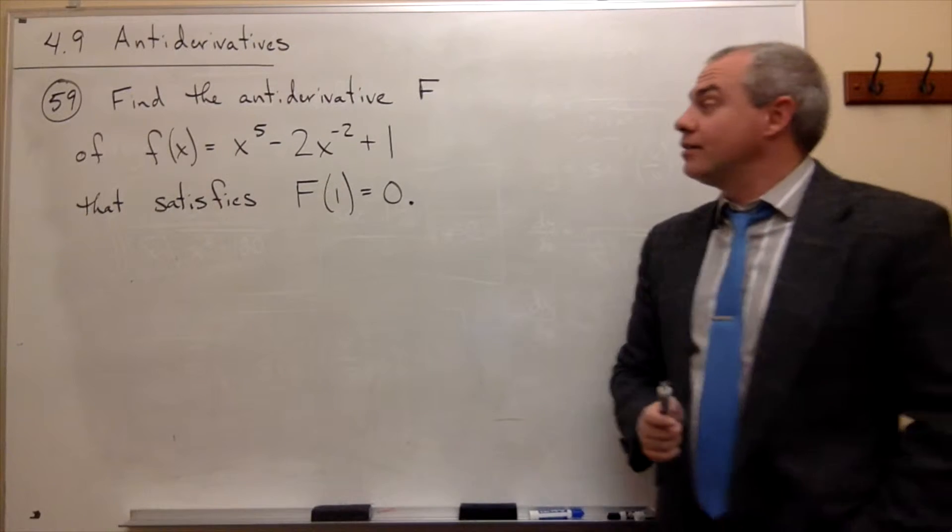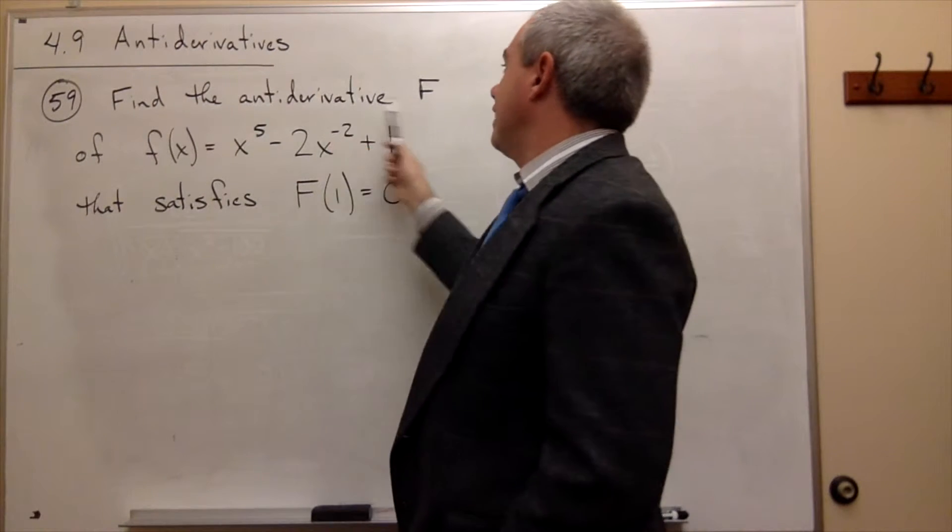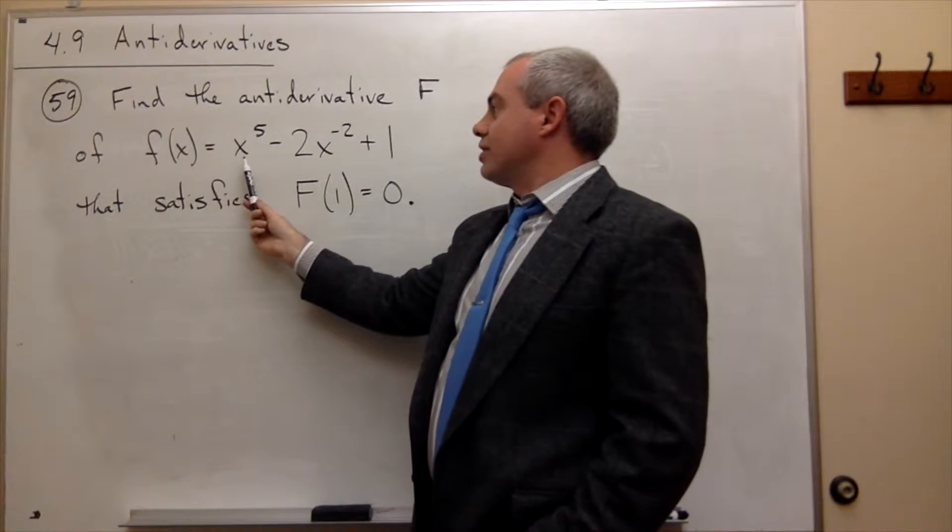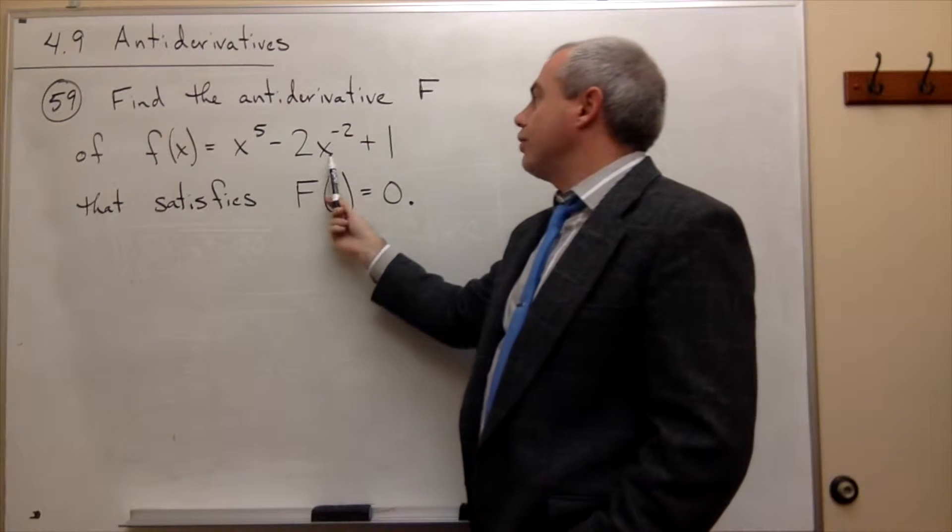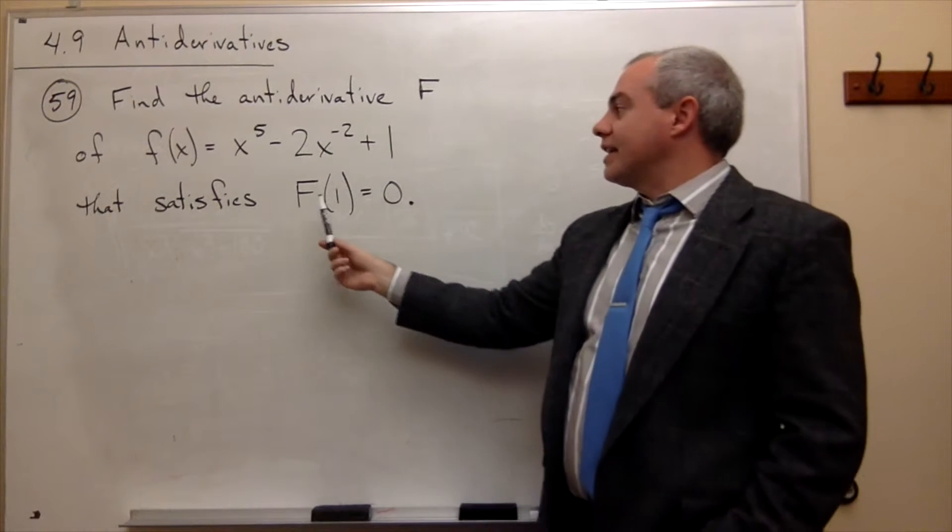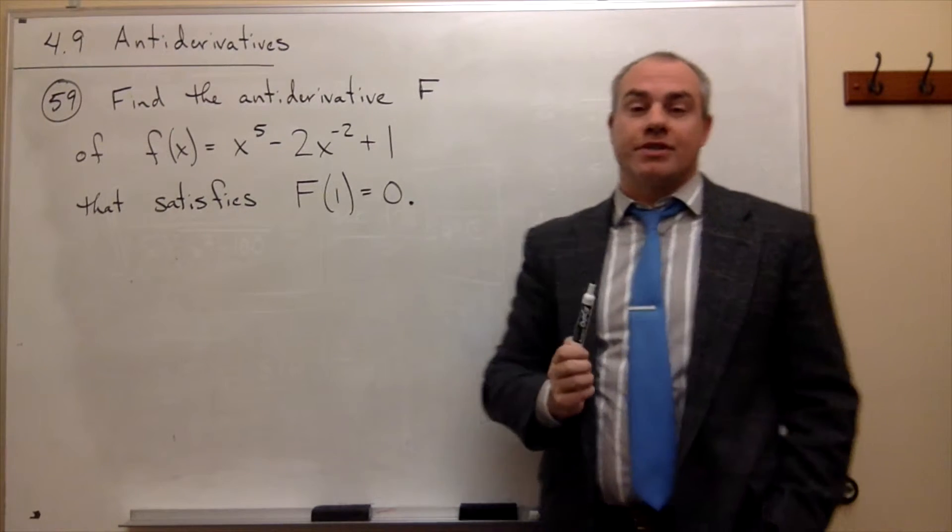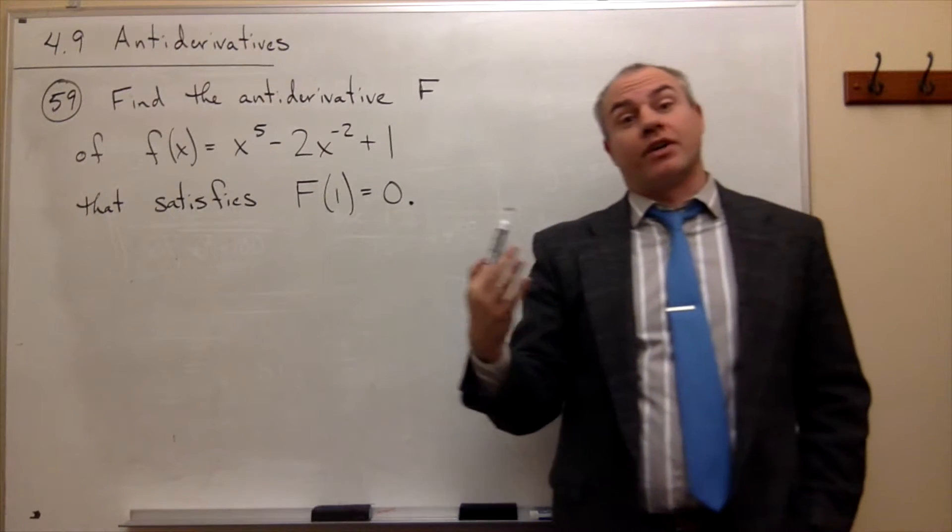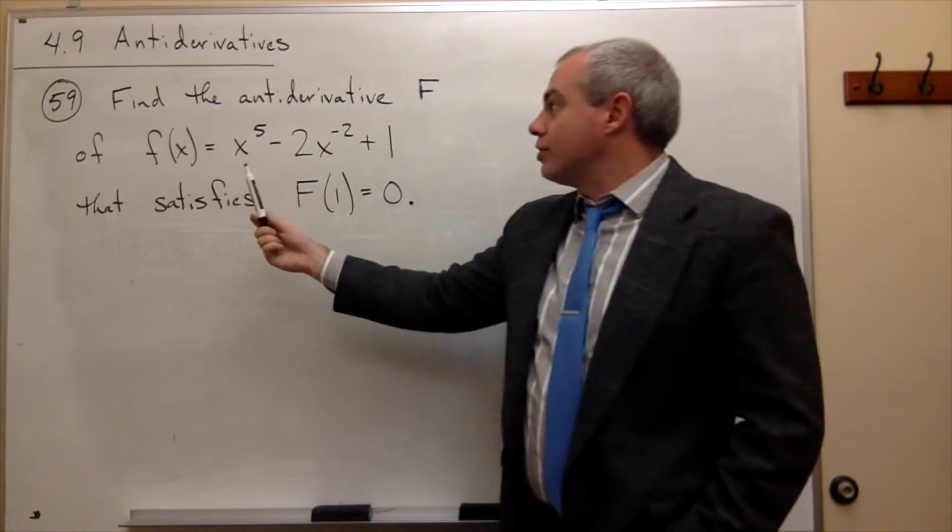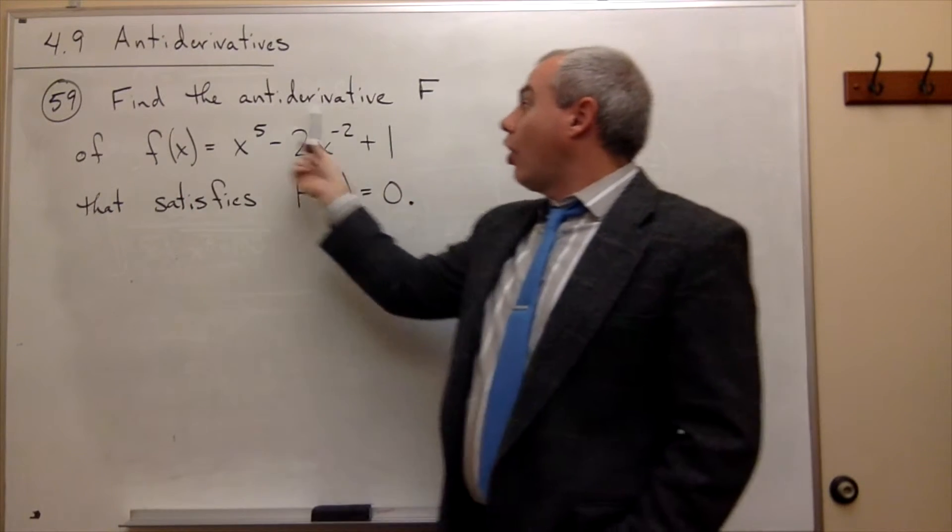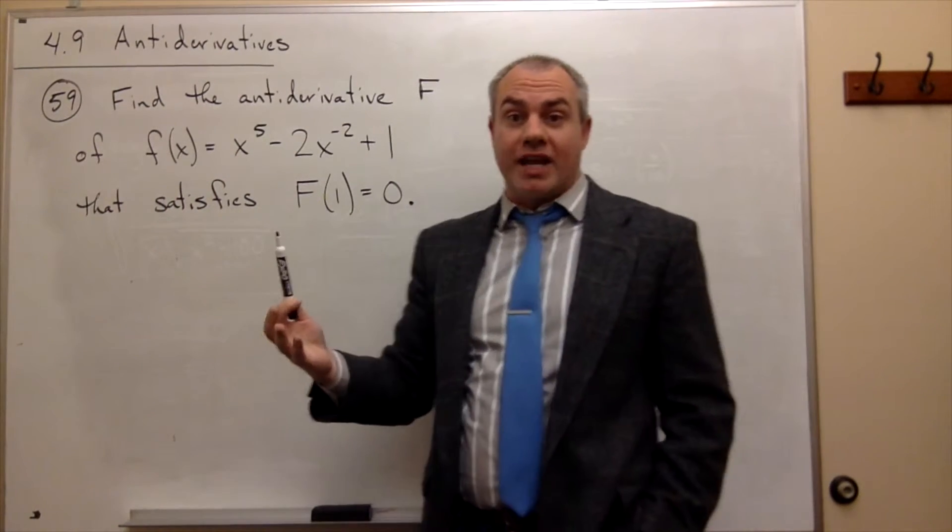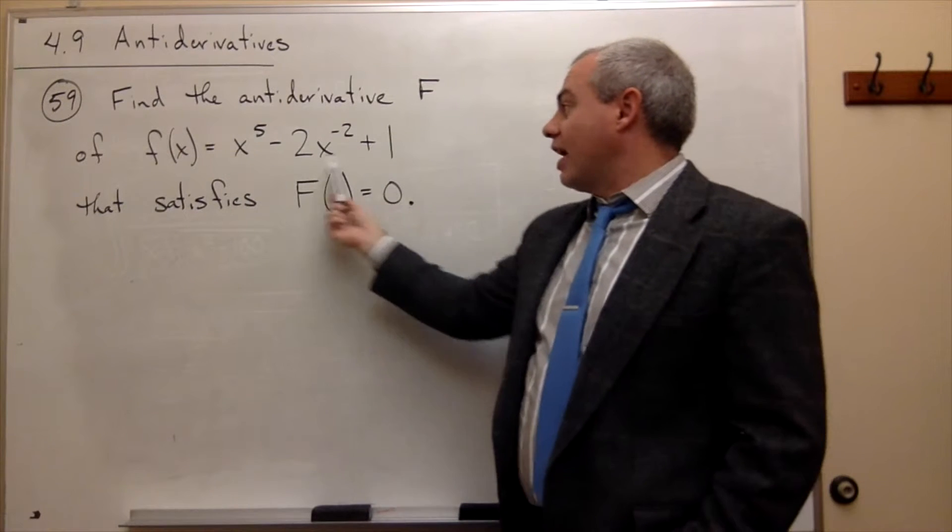In problem number 59, we'd like to find the anti-derivative capital F of this function little f of x, which is equal to x to the fifth minus 2x to the minus 2 plus 1, that satisfies that capital F of 1 is equal to 0. So we usually call this some sort of an initial value problem. What we really want to do is find all anti-derivatives of this guy, and then figure out which one of those anti-derivatives satisfies this condition.